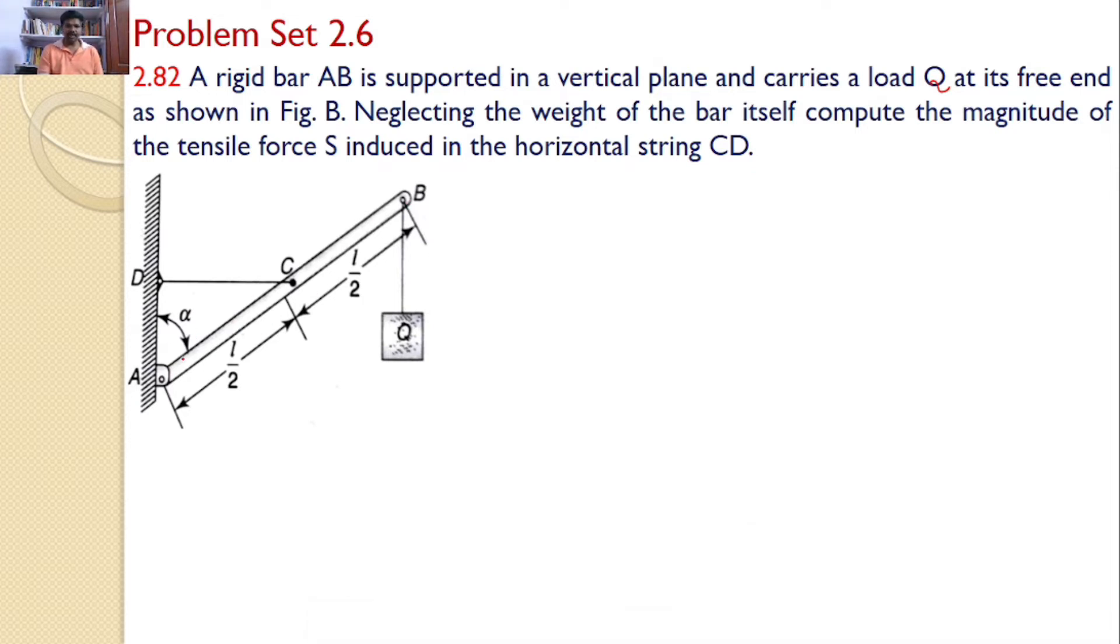A rigid bar AB is positioned like this. At A, there is a hinged support and it is supported by a string CD as shown. A load Q is attached at point B.